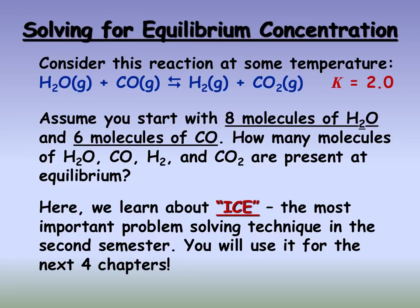An ICE table is just one of many methods where you can analyze an equilibrium problem. Here's the problem for this screencast: we have a reaction between water and carbon monoxide that produces hydrogen gas and carbon dioxide. It has a k-value of 2. That tells us that we're going to get some significant formation of products. Large k-values typically mean that products are going to be favored. Small k-values tell us that reactants are going to tend to be favored. We only have 8 molecules of water and 6 molecules of carbon monoxide, and the question is how many molecules of all species — reactants and products — will be present at equilibrium.